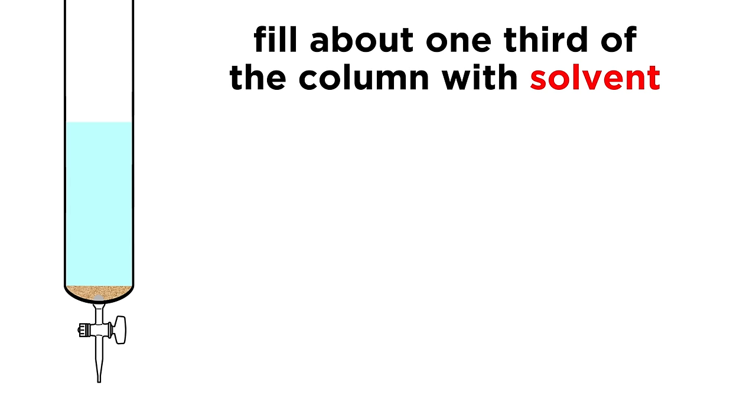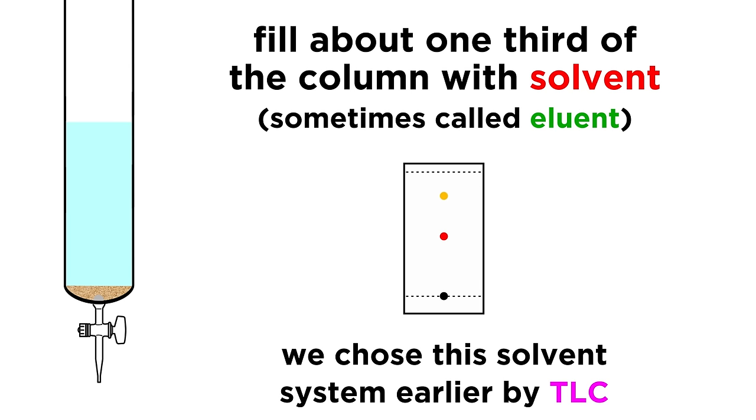Next we fill up the column about a third of the way with our solvent system, which is sometimes called eluent. This is the solvent system we selected by TLC, the one that gives us the optimum separation of the components in the mixture.